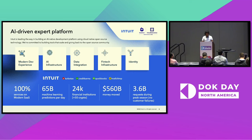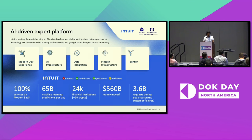Intuit's products are powered by five key platform areas, which includes the modern dev experience powered by our modern SaaS infrastructure, completely built on Kubernetes, which enables us to build better AI infrastructure through our data, fintech, and identity. These are some of the core infrastructure areas that power Intuit's product lineup, such as TurboTax, Credit Karma, QuickBooks, and MailChimp.